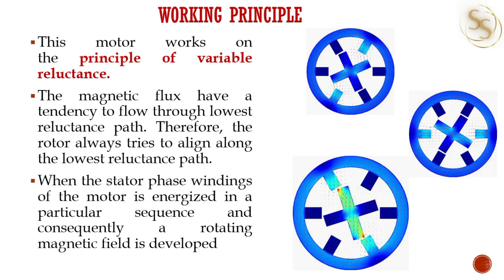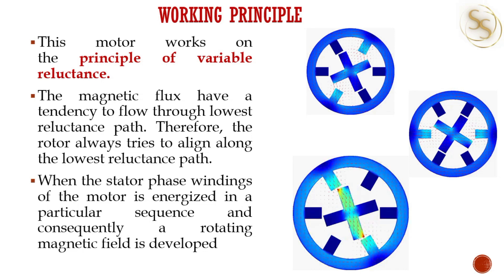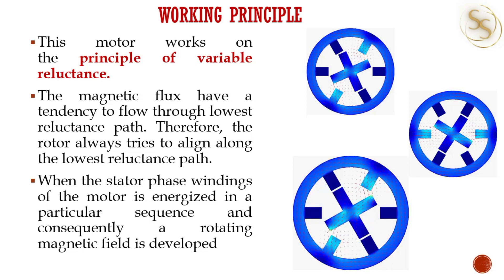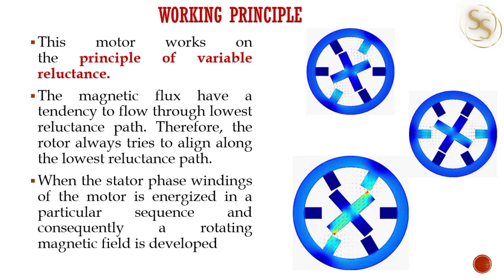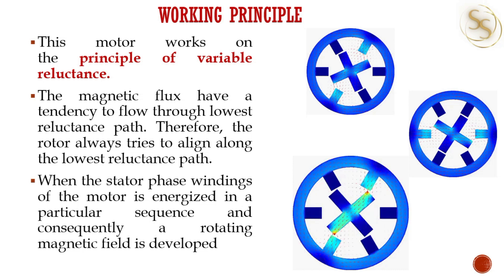Whenever a stator winding is energized, it will produce a magnetic field and the rotor will tend to align to the stator so that the flux path — or the reluctance path — will become minimum. When the stator windings are energized in a sequence, consequently, the rotor will continuously rotate in order to maintain the lowest reluctance path.